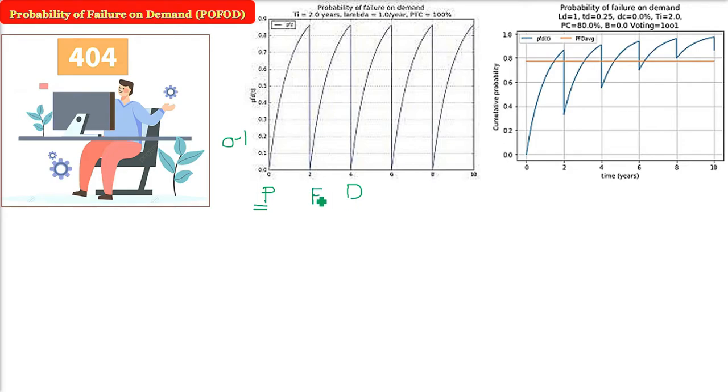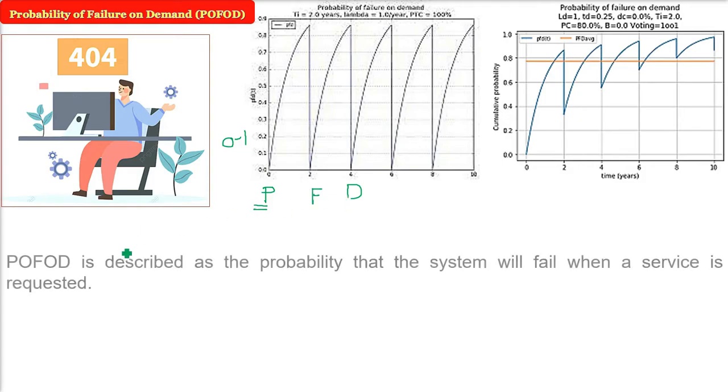The probability of failure when we are demanding it is POFOD. This is the probability that the system or software product will fail when we request a service, when a certain function or even its exact appearance is requested.